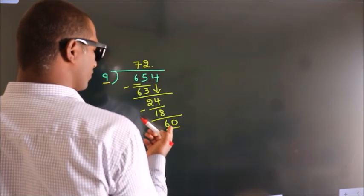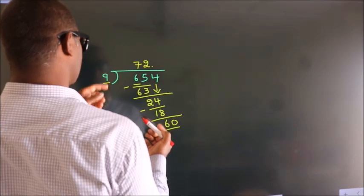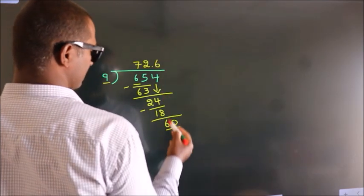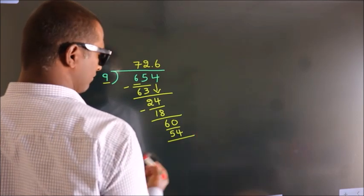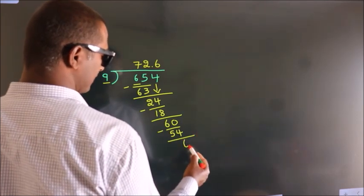A number close to 60 in the 9 table is 9 times 6, which is 54. Now we subtract, we get 6.